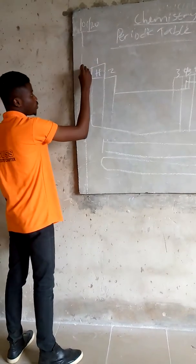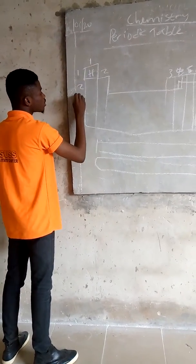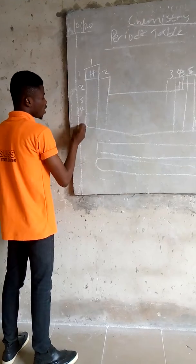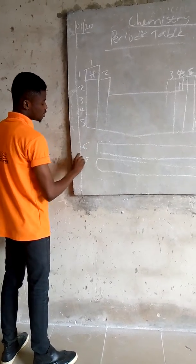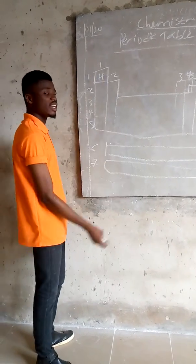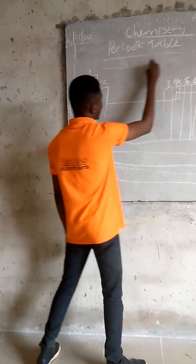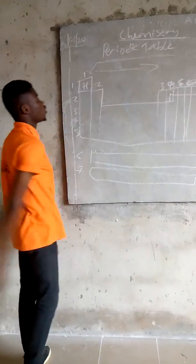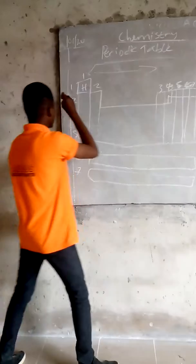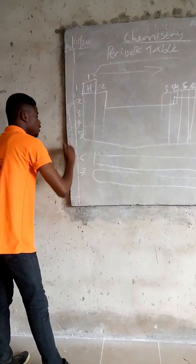So these are the periods. You have Group 1, Group 2, Group 3, 4, 5, 6, and 7. The periodic table is divided into groups and periods. Now these are the groups. The horizontal are the groups, while the vertical are the periods.